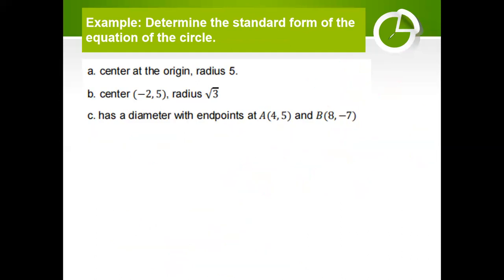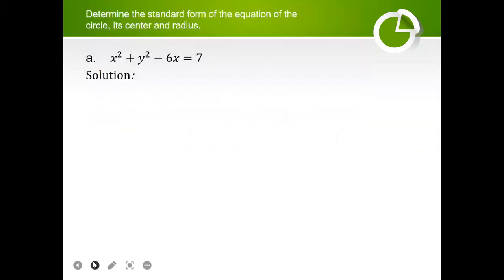So again, if the given are the endpoints of your diameter, all you need to do is calculate first for the midpoint, which serves as the center, and then solve for the distance between an endpoint to the center. Now let's determine the standard form of the equation of the circle and its center and radius from the general form. All you need to do is use completing the square.